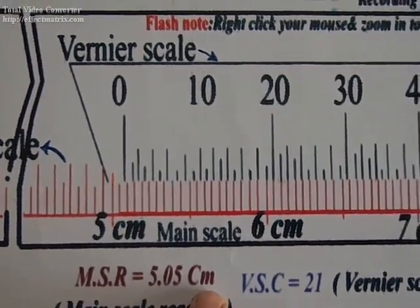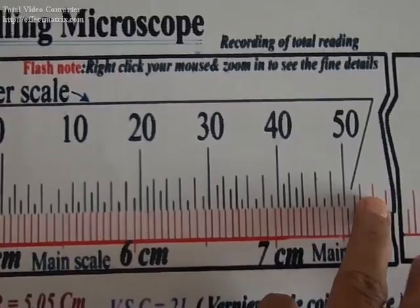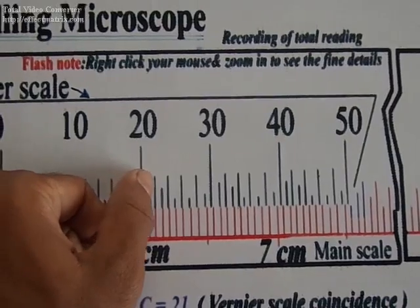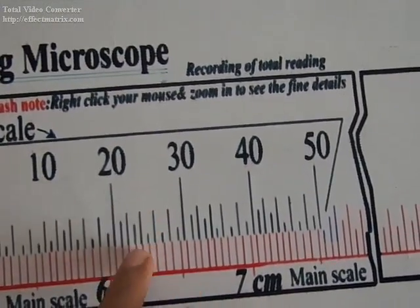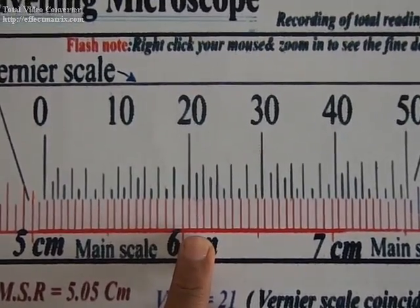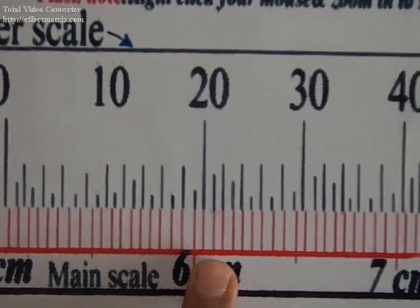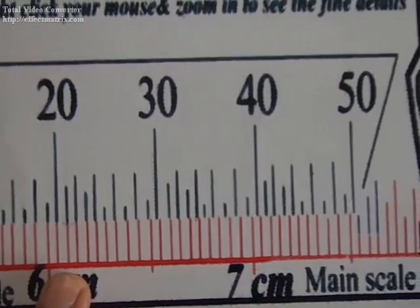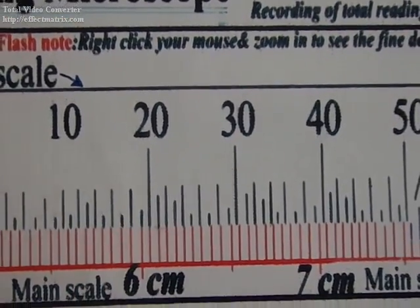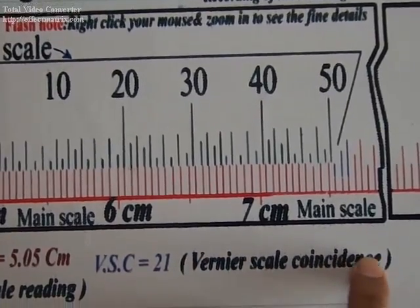Moving on to the vernier scale divisions, one of the vernier scale divisions coincides exactly with any one of the main scale divisions. That is to be measured correctly. You can use a magnifying lens. In this case it happens to be at the twenty-first vernier division that coincides.